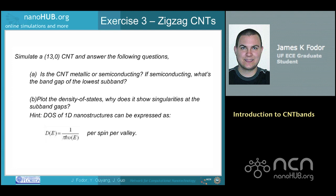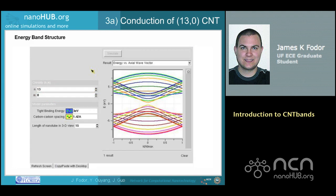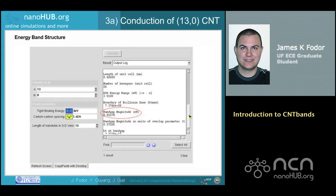This is the solution to exercise 3. Simulate a 13-0 CNT and answer the following questions. A: Is the CNT metallic or semiconducting? If semiconducting, what is the band gap of the lowest subband? B: Plot the density of states. Why does it show singularities at the subband gaps? For part A, set N and M to 13 and 0 respectively. Press simulate and the following E-K relationship will appear. There is clearly a band gap, so we conclude that the CNT is semiconducting. Selecting output log and scrolling down to band gap magnitude shows the band gap is 0.81678 eV.